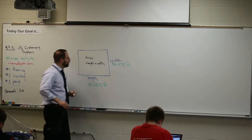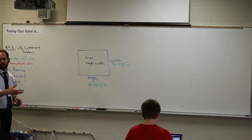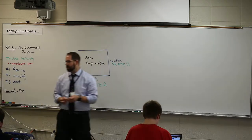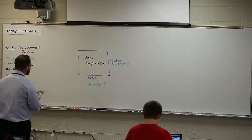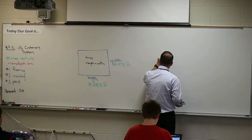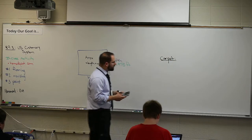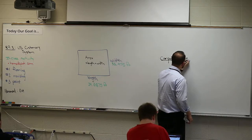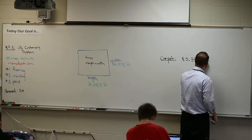Then with that area you have to figure out the actual cost of putting carpet, flooring, or tile in the room. I'm going to make up these numbers but use the actual room dimensions. Let's say we're going to do carpet. Let's say the carpet I'm going to buy is five dollars and 34 cents per square foot.